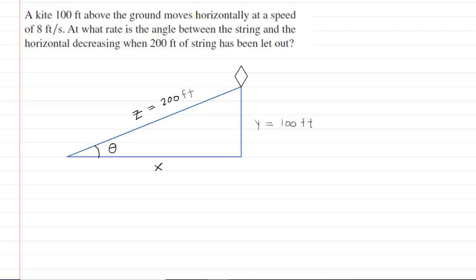We've gone ahead and drawn a picture to represent the information given in the question. We've labeled the distance from where the person is flying the kite to the point underneath the kite as x. The height of the kite is represented by y and has a value of 100 feet, and then the length of the string is z, which has a length of 200 feet. The angle between the kite string and the horizontal is represented here by theta.